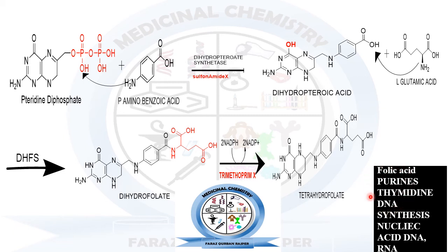Once the two drugs — sulfonamide and trimethoprim — are given, this entire pathway will be blocked and the normal survival of the bacterial cell will not happen. Sulfonamide when given in individual therapy will only block the dihydropteroate synthetase step and act as a bacteriostatic drug. But in combination therapy with sulfamethoxazole or trimethoprim, it will act as a bactericidal agent, because now two different steps of the pathway are being inhibited — one by sulfonamide and the next by trimethoprim — so the entire pathway is blocked at two different sites.